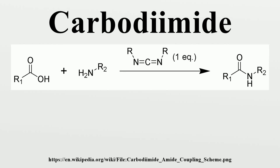A carbidiamide, or methanediamine, is a functional group consisting of the formula Rn-C=N=N-R. Carbidiamides hydrolyze to form urease, which makes them uncommon in nature. From the perspective of small molecule activation, carbidiamides are isoelectronic with carbon dioxide.